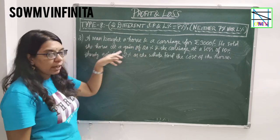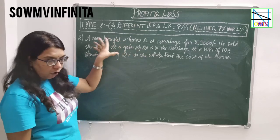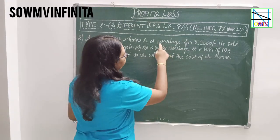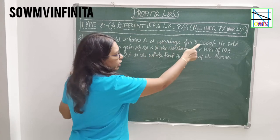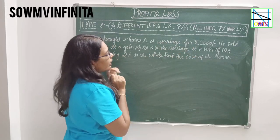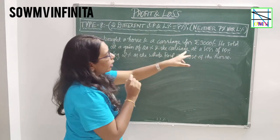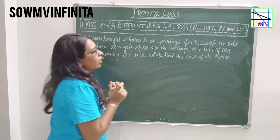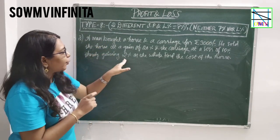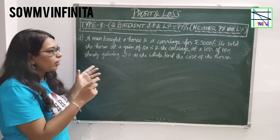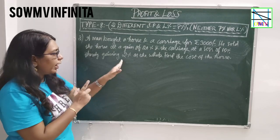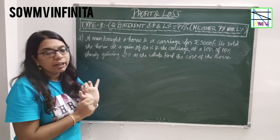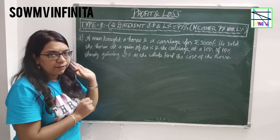The conditions are: gain percent for the horse is 20%. For the carriage, he incurred a loss of 10%. Overall, he gained 2% on the whole transaction of the horse and carriage. We need to find the cost price of the horse.